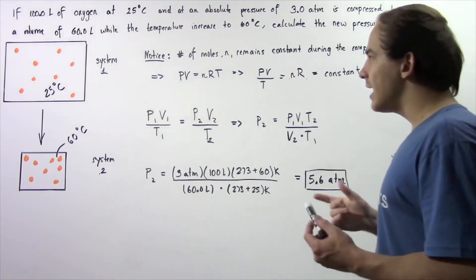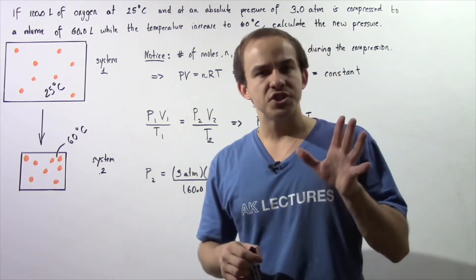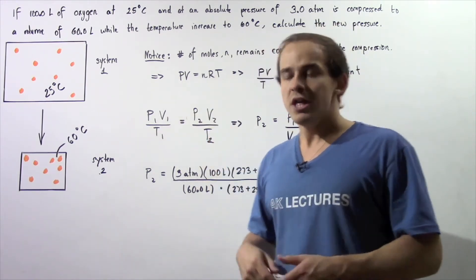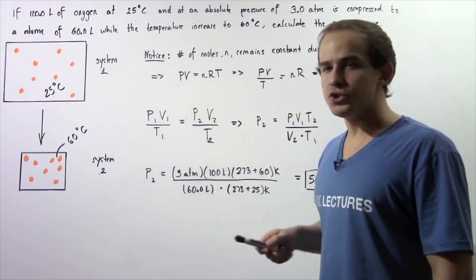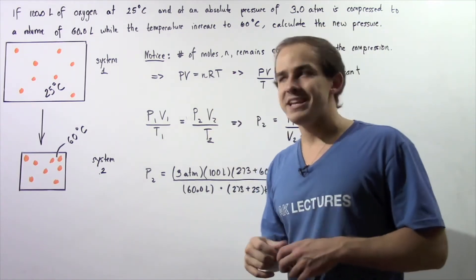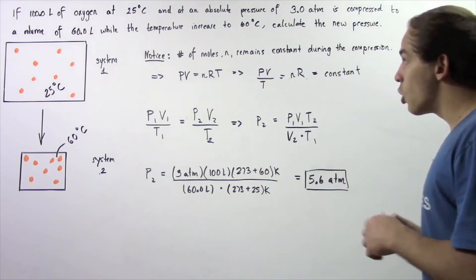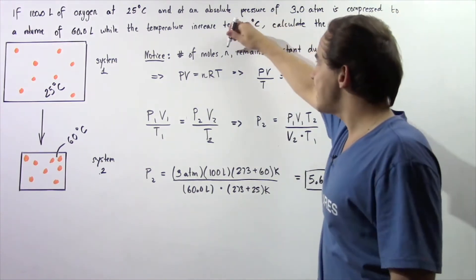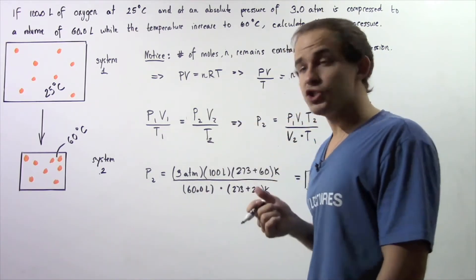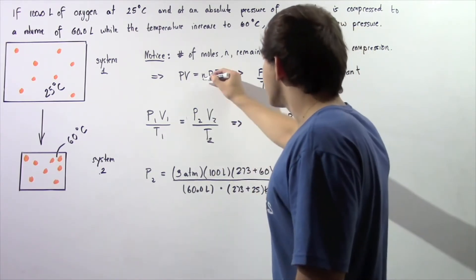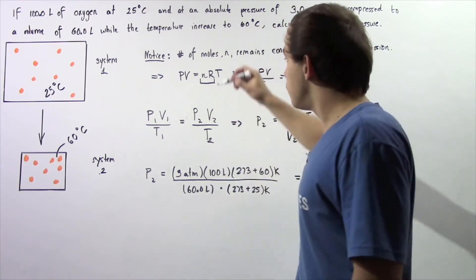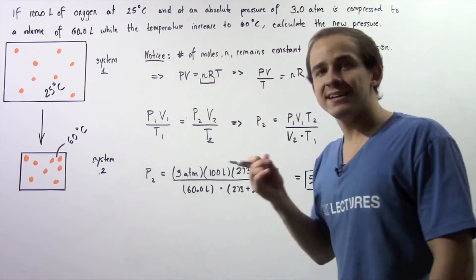Let's actually apply our ideal gas law which states that the product of the pressure and the volume is equal to the product of the number of moles, our gas constant, and the temperature given in Kelvin. Notice that we just said N remains constant and R, the gas constant, is also a constant. So the product of a constant and a constant is also a constant. The product of N and R is a constant.